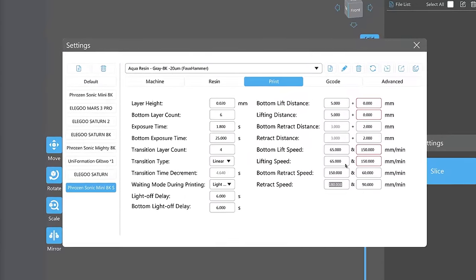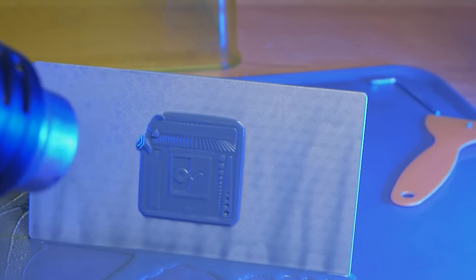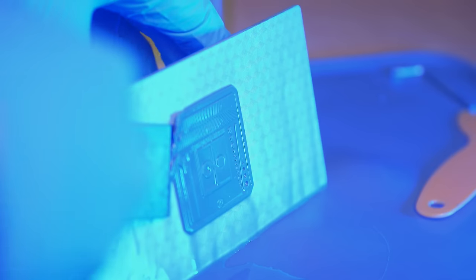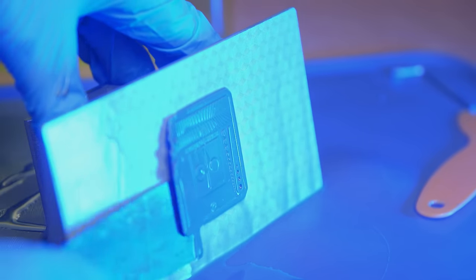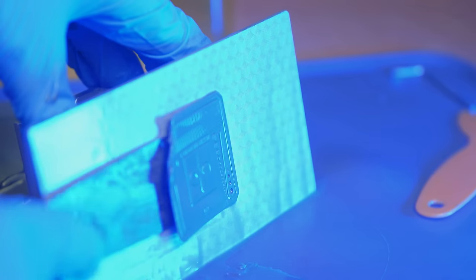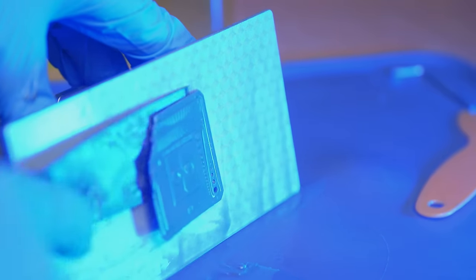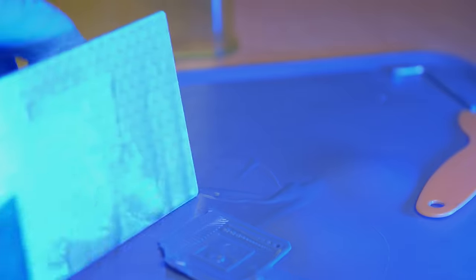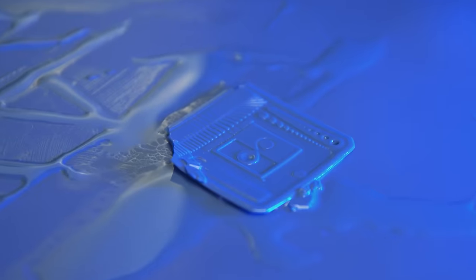So I copied some settings over from Lychee as I mentioned before, and I started with exposure times of 1.8 seconds per 20-micron layer and 25 seconds base layer exposure time. Nothing wrong with that, pretty standard based on what I've tested recently. The result was a print that was so adhered to the build plate I actually had to heat up the plate and resin using a heat gun just to get it off without shattering it.